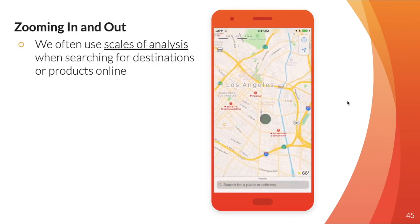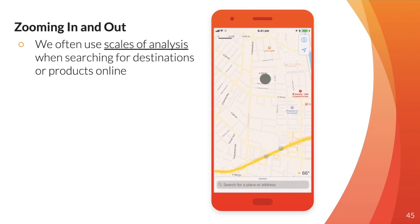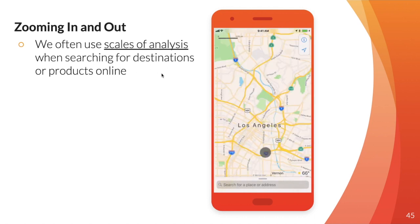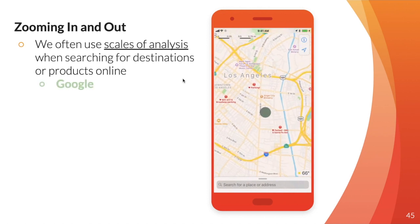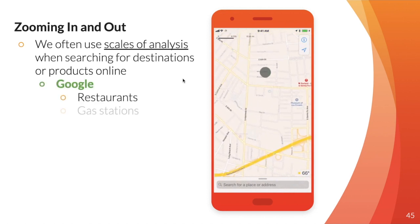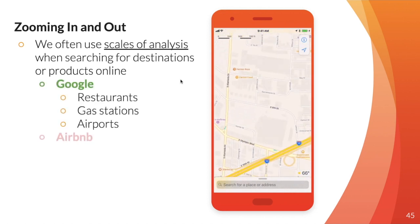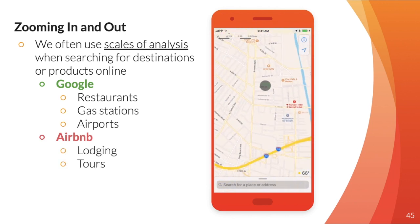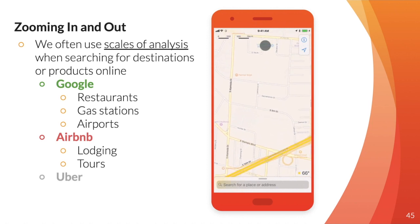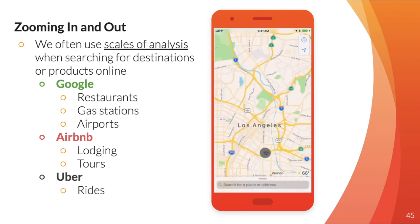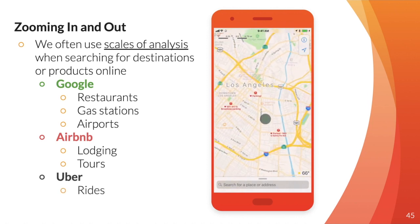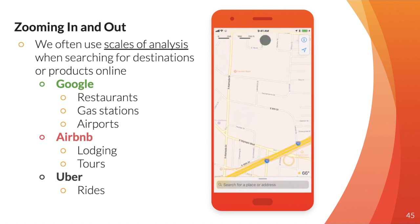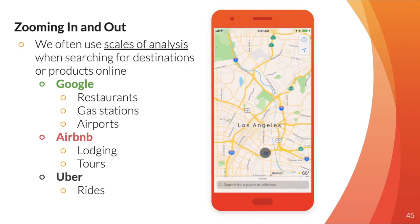Zooming in and out is something we actually do all the time, but we don't think about it as changing our scales of analysis — we just think of it as zooming in and out. On Google we use it for restaurants, gas stations, airports. On Airbnb we use it to find lodging or tours. With Uber we might zoom in to find a ride in a particular location. We use scales of analysis constantly in our day-to-day lives.